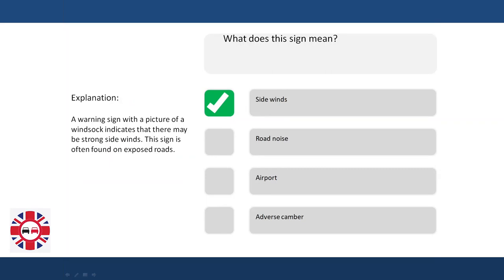Explanation: A warning sign with a picture of a windsock indicates that there may be strong sidewinds. This sign is often found on exposed roads.